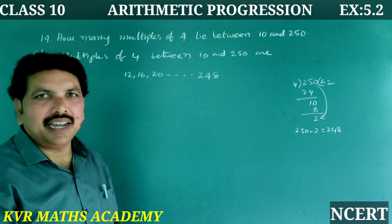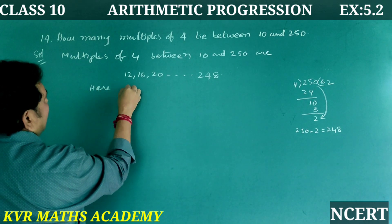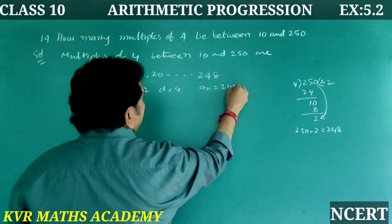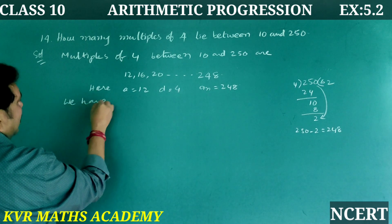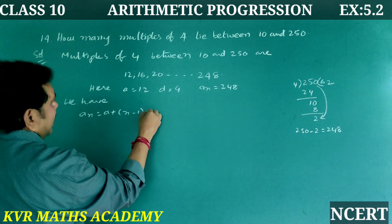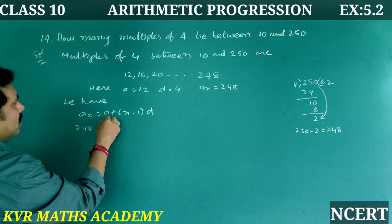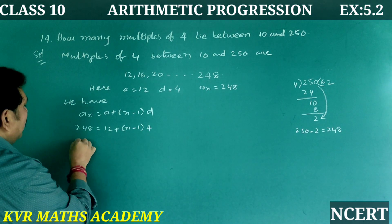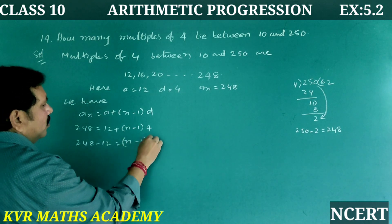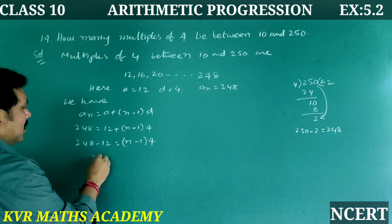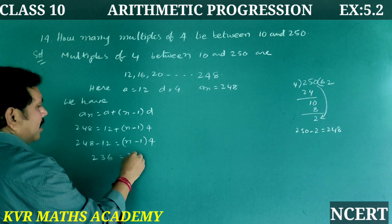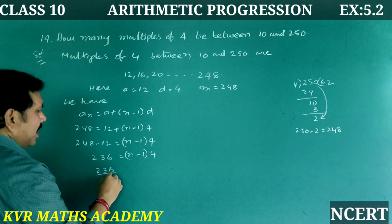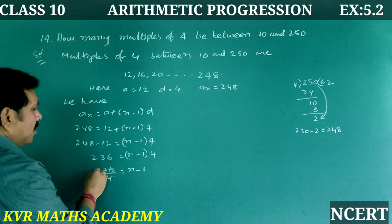Between 10 and 250, the first multiple of 4 is 12 and the last is 248. So here, a is equal to 12, d is equal to 4, and a_n is equal to 248. Now we apply the formula: a_n = a + (n − 1) × d. So 248 = 12 + (n − 1) × 4, which gives 248 − 12 = (n − 1) × 4, so 236 = (n − 1) × 4.